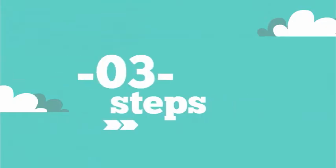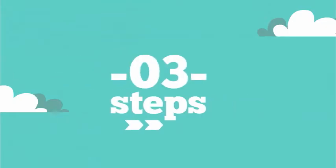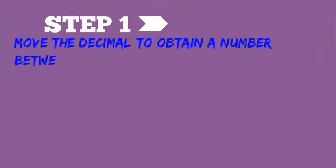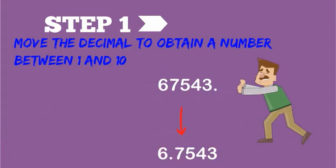If we want to take a very big or very small number and put it into scientific notation, we can use a few steps. The first step is we're going to move the decimal point either to the right or to the left to obtain a number between 1 and 10.